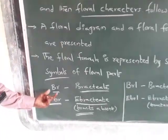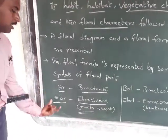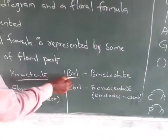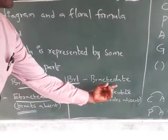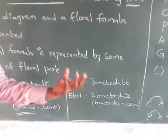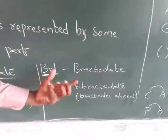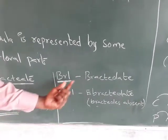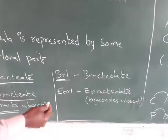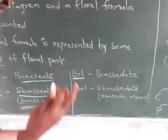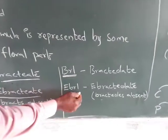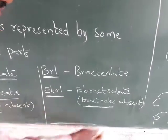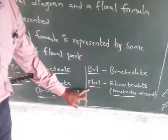So, BR means presence of bracteate, and Ebr means absence of bracteate. A flower which has the bracteate is called a bracteate flower, indicated by BR. Sunflowers do not have the bracteate — that is indicated by Ebr, which means ebracteate, meaning the absence of bracteoles.